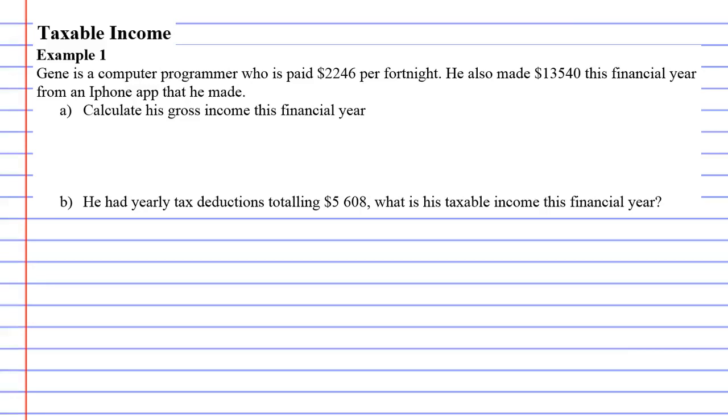Taxable income example one. Gene is a computer programmer who is paid $2,246 per fortnight. He also made $13,540 this financial year from an iPhone app that he made. Question A says calculate his gross income for this financial year.